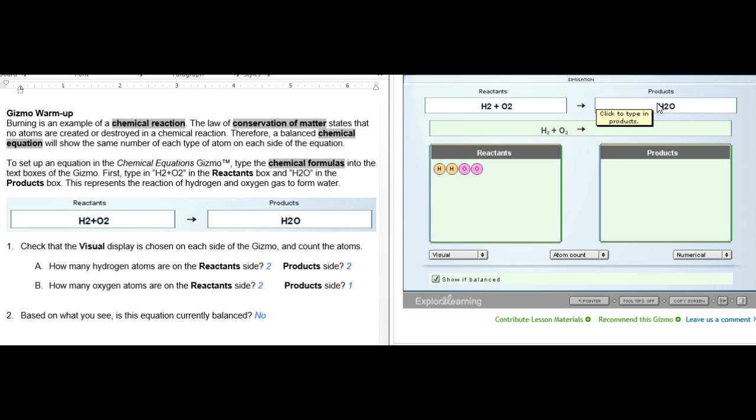One thing I like to tell them is that it doesn't show the subscripts. Unfortunately, you can't make a subscript on this, so I like to point out that these are really supposed to be subscripts so they don't get confused that later on they're going to see coefficients that are going to be numbers as well.